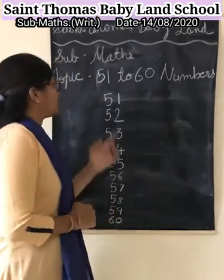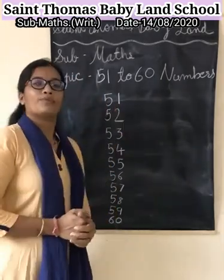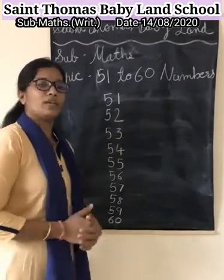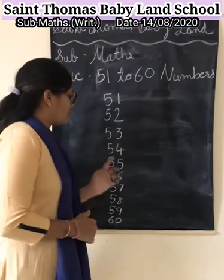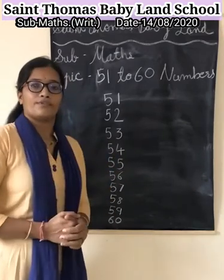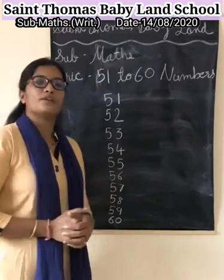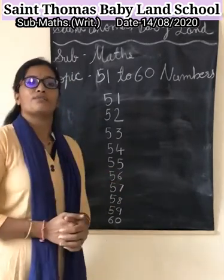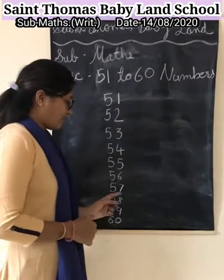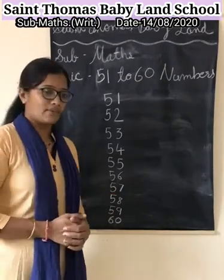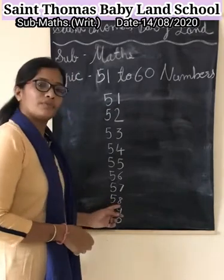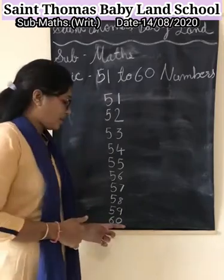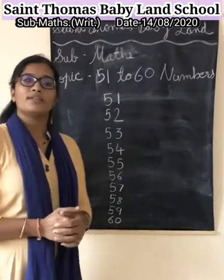Let's repeat again. 5, 1 — 51. 5, 2 — 52. 5, 3 — 53. 5, 4 — 54. 5, 5 — 55. 5, 6 — 56. 5, 7 — 57. 5, 8 — 58. 5, 9 — 59. And 6, 0 — 60.